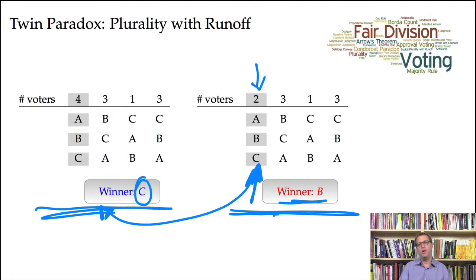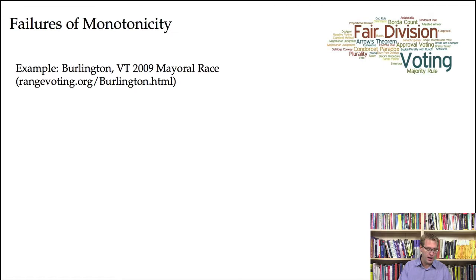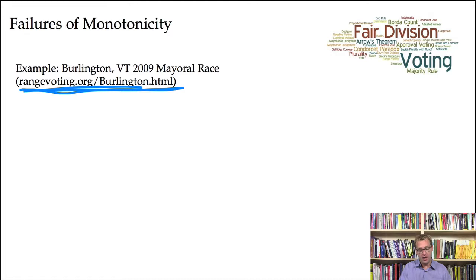This is another example of the no-show paradox with plurality with runoff. I'll point you to a website that has a nice discussion of an actual election — the Burlington, Vermont mayoral race — in which it's argued that we actually saw an example of non-monotonicity at play.